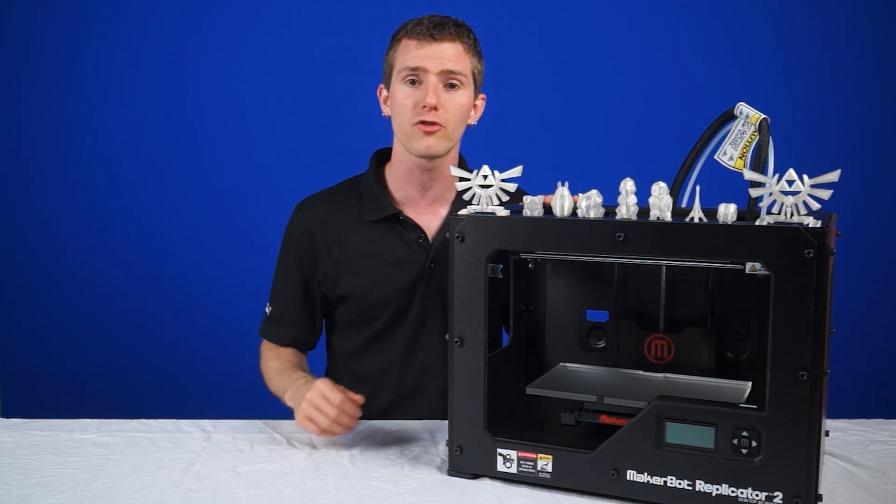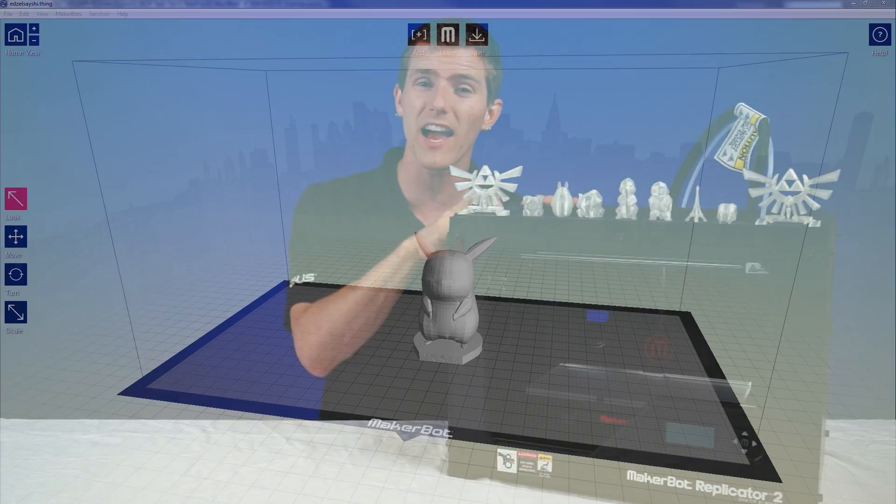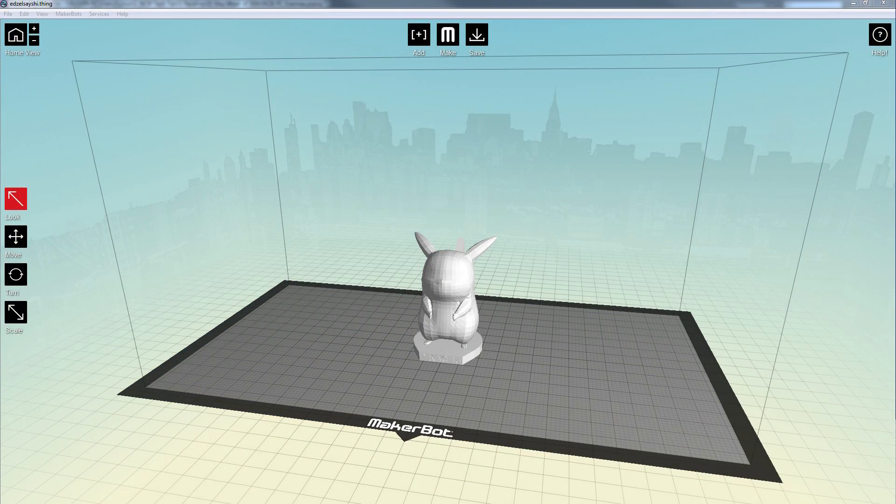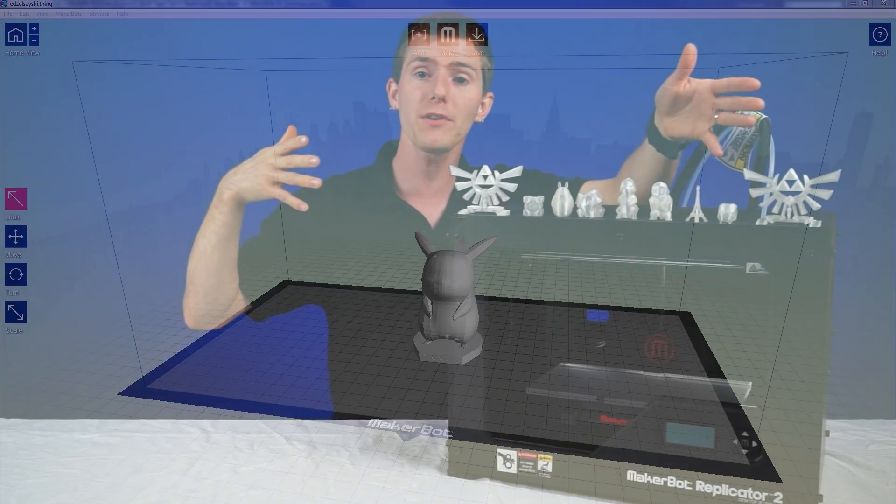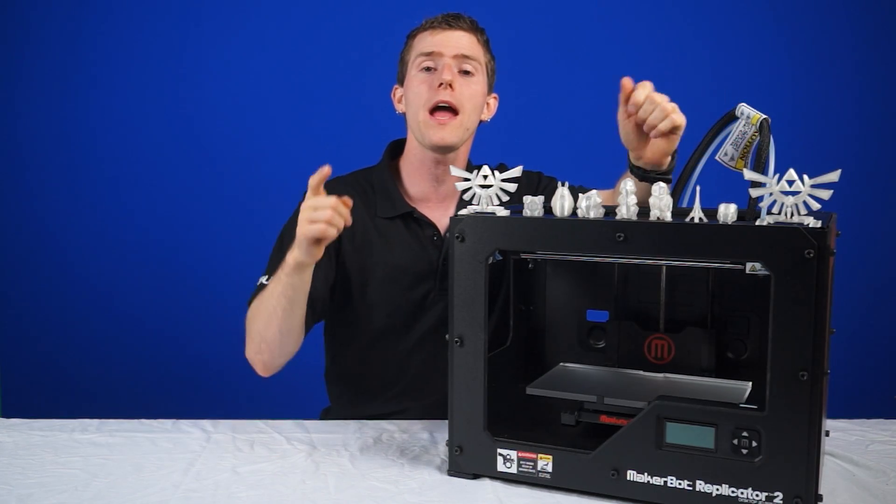Replicator G is a much more universal solution, but MakerWare is specifically designed for the Replicator series and is a little bit more user-friendly. Here are a few of the things that we've printed so far which we will be giving away. More on this at the end of the video.